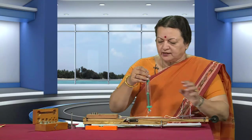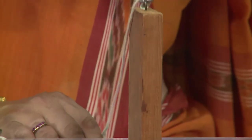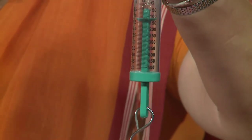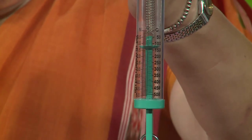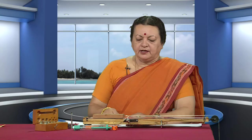We also require the weight of the block. Suspend it from the spring balance again without letting it touch anything — its weight is 120 grams. Acceleration due to gravity at the place where we are performing this experiment can be taken as 9.8 meters per second squared. In order to tabulate our readings, let us make our observation table.